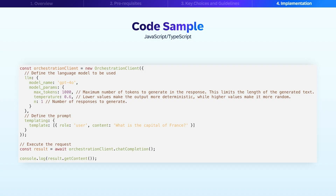Let's look at a practical example of how to implement an AI model using JavaScript. This code demonstrates the simplicity of using the orchestration client to interact with AI models. First, we create a new orchestration client with specific configurations. We define the language model to be used — in this case GPT-4o — along with several important parameters: max tokens is set to 1000, which limits the length of the generated response; temperature is set to 0.6, providing a balanced output between deterministic and creative responses; and N is set to 1, indicating we want a single response. Next, we define the prompt using the templating approach, creating a simple user message asking 'What is the capital of France?' We then execute the request using the chat method, which sends our configured request to the AI model through SAP AI Core. Finally, we output the results to the console using the get content method. This straightforward implementation demonstrates how easily you can access powerful AI capabilities through SAP AI Core using just a few lines of code.